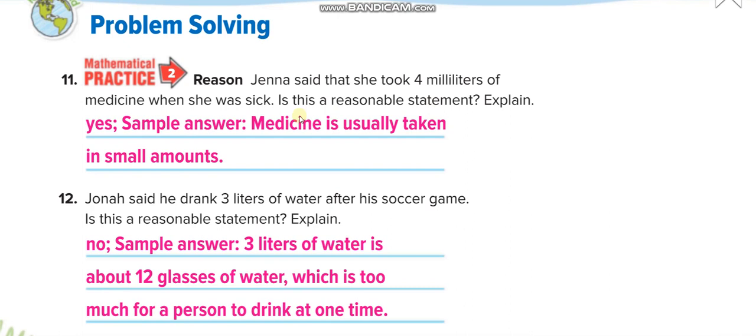Jonah said he drank three liters of water - three complete bottles, which means around 12 glasses. It's not possible for a person to drink at one time, so no, his estimate is wrong. Three liters - maybe he's talking about 300 milliliters or maximum one liter you can say.